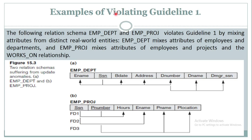This example shows a violation of guideline 1. The attributes in this schema are a combination of employee and department — all employee attributes along with department number, department name, and the manager of the department. Another example is a combination of employee and project, containing SSN, project number, hours, employee name, project name, and project location. These are combinations of attributes from two separate tables.